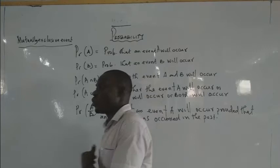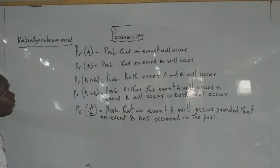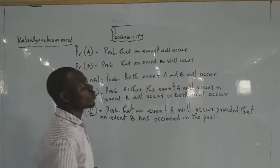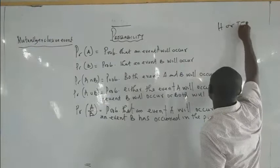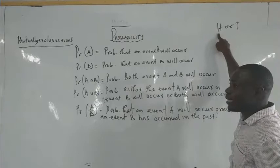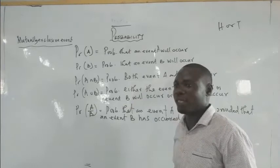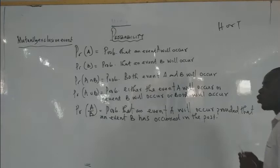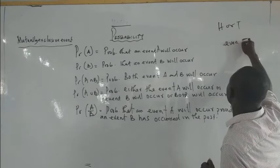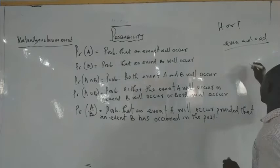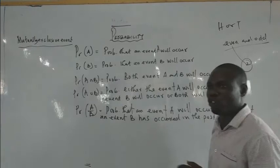For example, in a single toss of a coin, it is either heads or tails, but both cannot occur at the same time. So the two events — head and tail — in a single toss of a coin are mutually exclusive events. Similarly, in a single roll of a die, both even numbers and odd numbers cannot occur at the same time, so they are also mutually exclusive events.